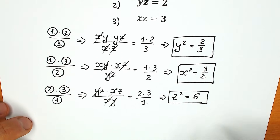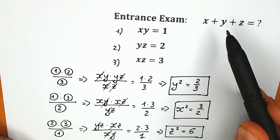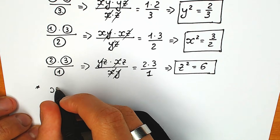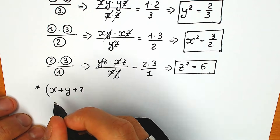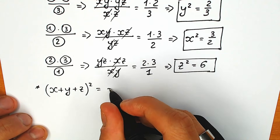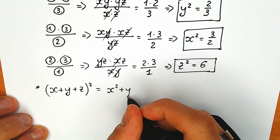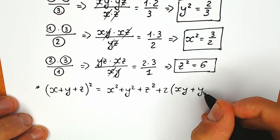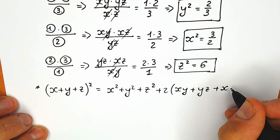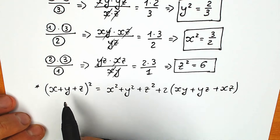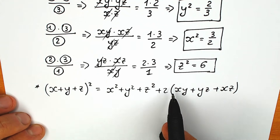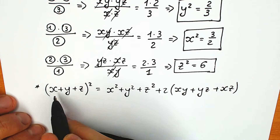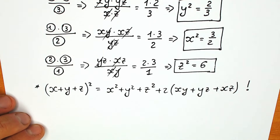A lot of students might ask why we find these squares — y squared, z squared, x squared — because we need to find x plus y plus z. Right now I'll write this formula from school. When we have x plus y plus z raised to the second power, this equals x squared plus y squared plus z squared plus 2 times (xy plus yz plus xz). This is our basic formula with three variables.